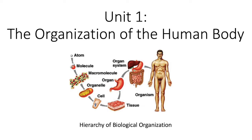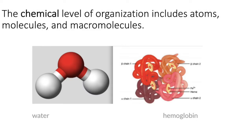For example, when we talk about the skeletal system, you'll need to know about the cells that are important — osteocytes, osteoblasts. We'll talk about macromolecules; for example, there's a molecule called myelin, a fatty substance that surrounds our axons. And of course throughout the entire semester we talk about the organ systems.